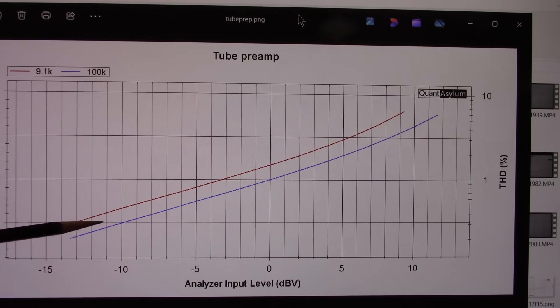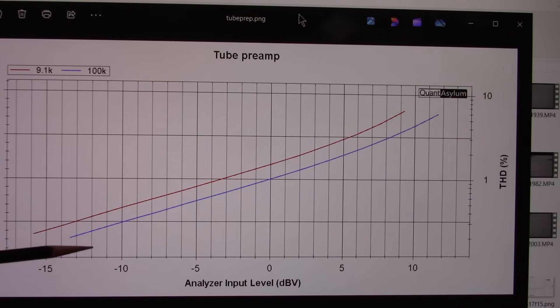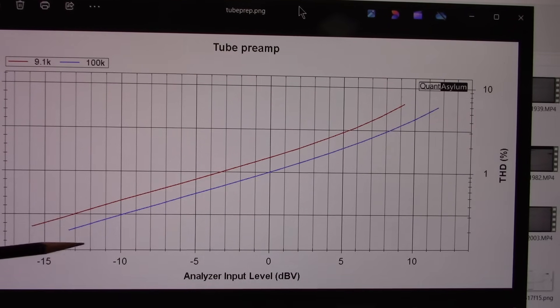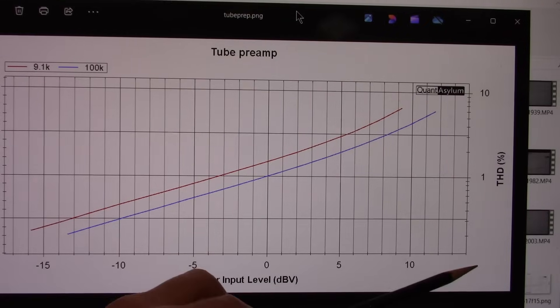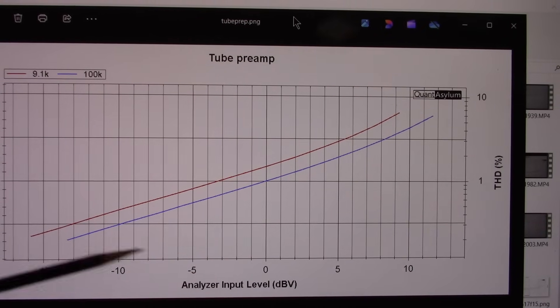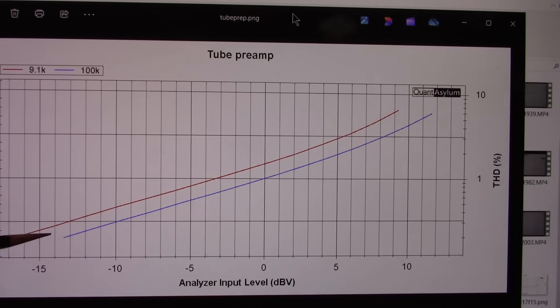You know, at a much lower signal level, about a quarter of the input, which would be right around here, you can see the distortion level is much lower. But we're still around 0.2 or 0.3%.